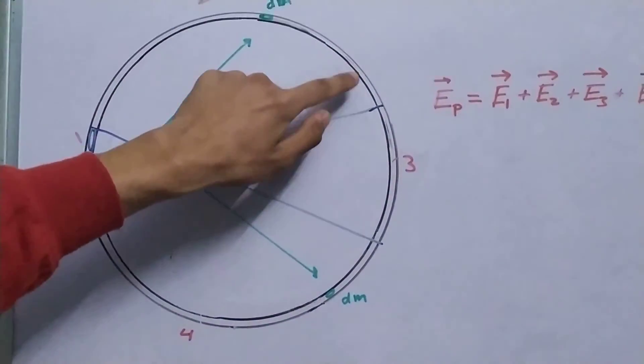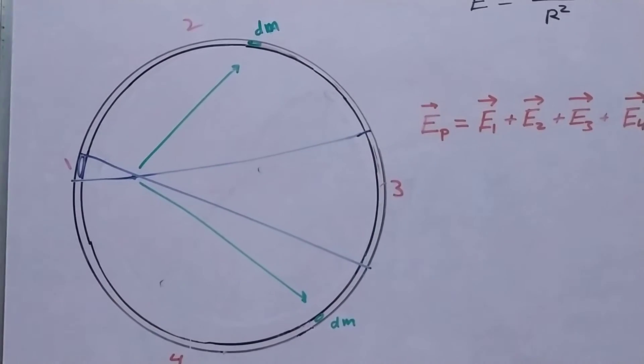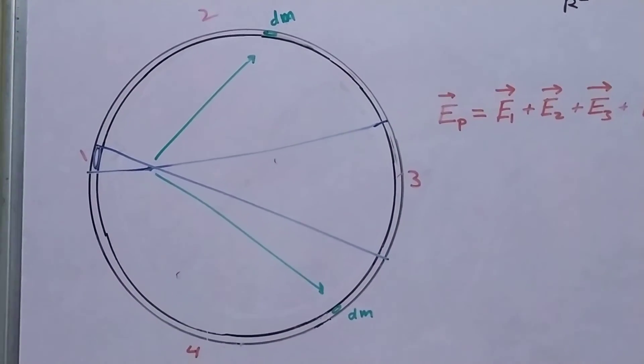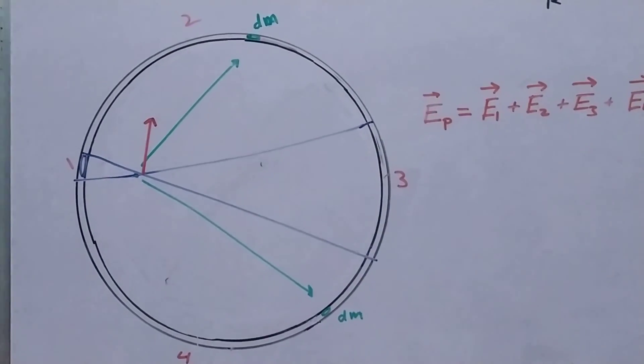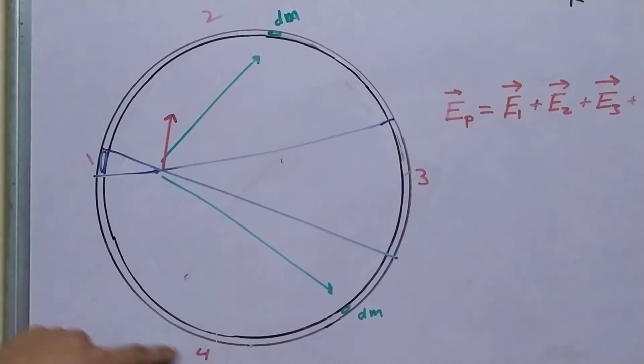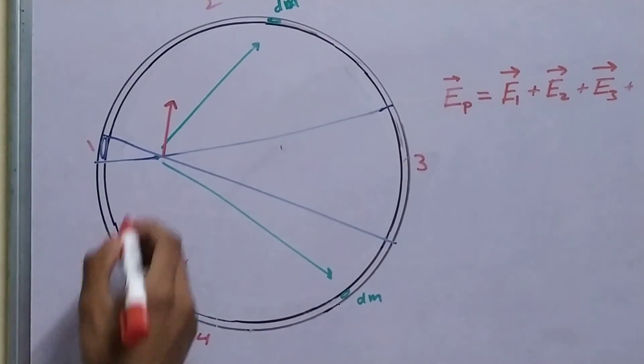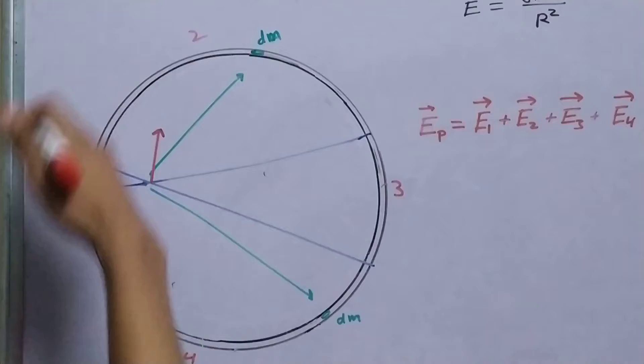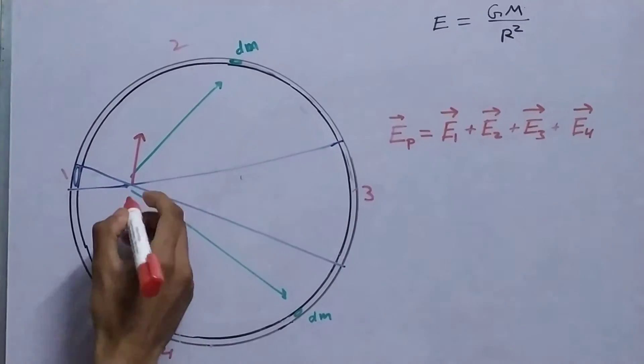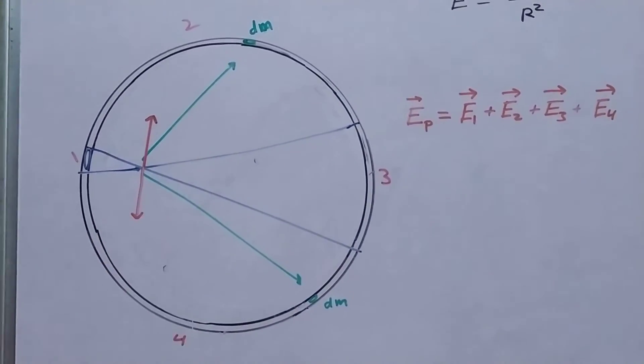If this part, region number two, creates a field in this direction, upwards, then this field, the created region four, will be equal because the masses are the same, they are basically the same shapes, but in the opposite direction.